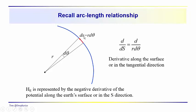We're dealing with ds, and using an arc-length relationship we can see that the differential step ds is equal to R — the radius of the Earth — times the angle subtended by the step, d theta. So the operator d/ds, taking the derivative with respect to s, is d over R d theta. This is the derivative along the surface, or in the tangential direction. H sub e is represented by the negative derivative of the potential along the Earth's surface in the s direction.